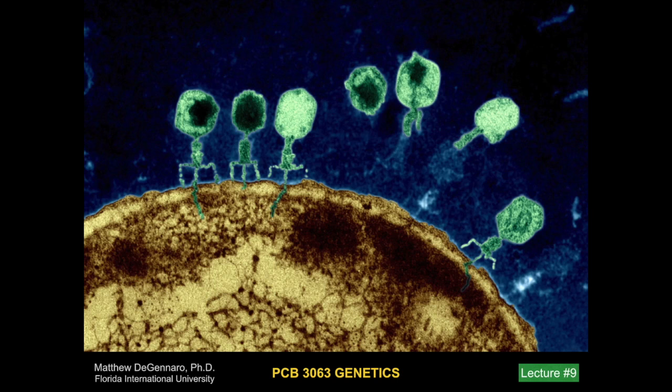This is an electron micrograph of phage infecting bacteria. The phage are in green and the bacterial cell is in brown. You can see a little green strand coming through the cell wall and cell membrane of the bacteria, and this is a single strand of DNA that is infecting the bacteria. By understanding the relationship between the phage and the bacteria, we have learned a lot about both viral and bacterial genetics, which has led to crucial insights applicable to eukaryotes.